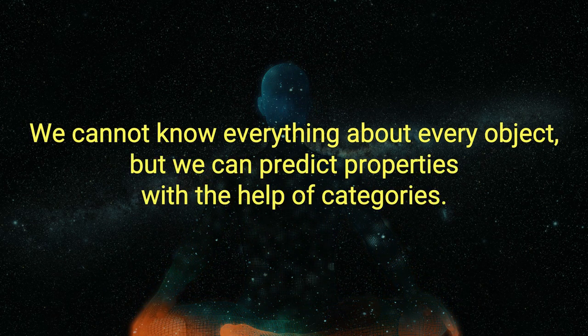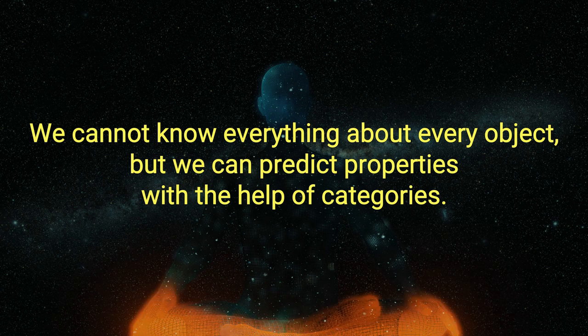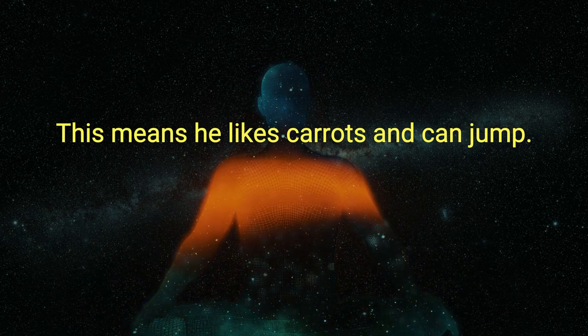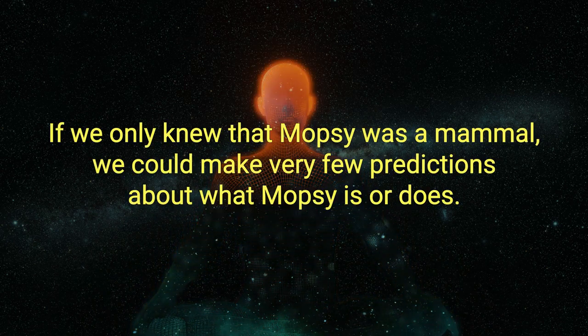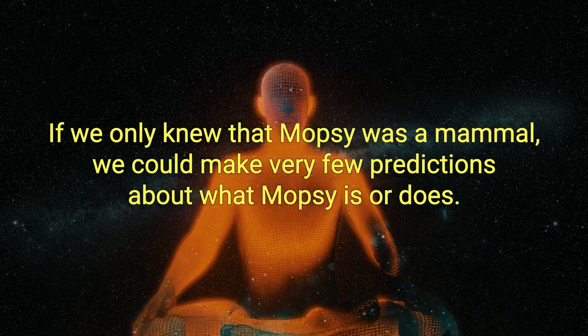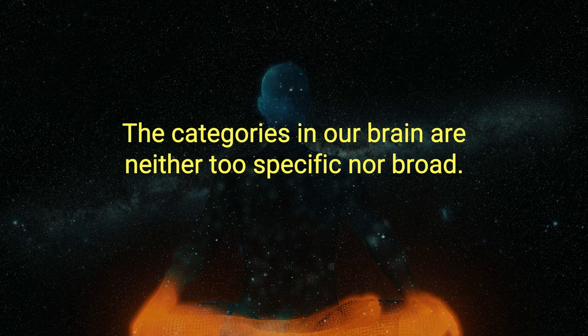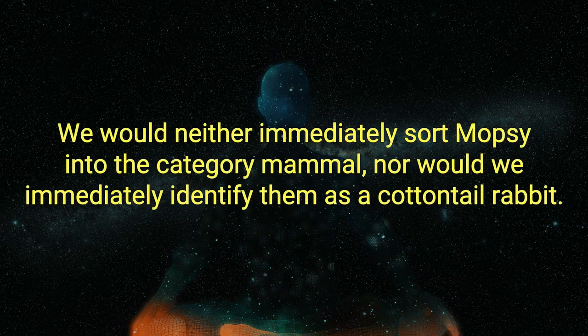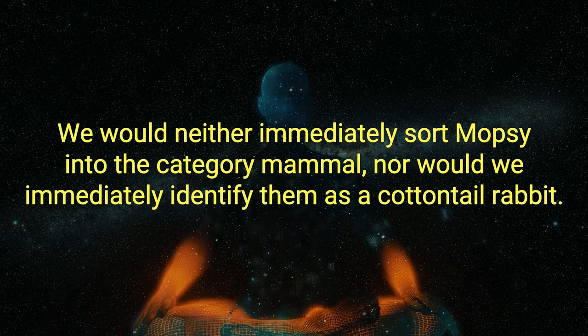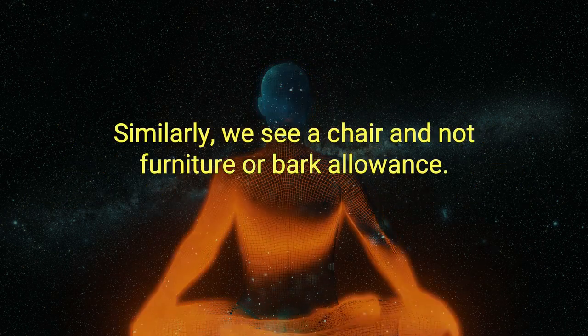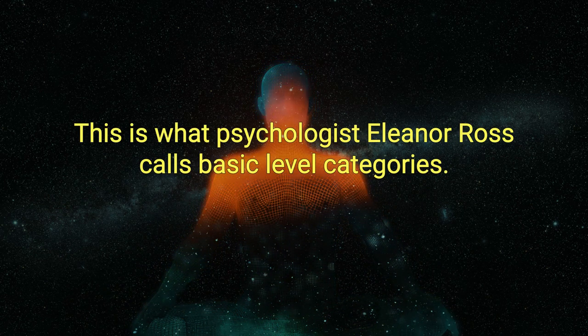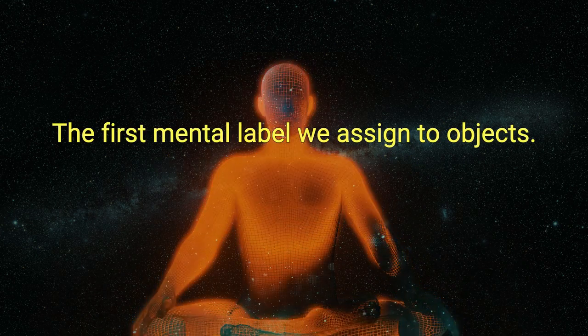We cannot know everything about every object, but we can predict properties with the help of categories. As an example, Mopsy has long ears, so he is a rabbit. This means he likes carrots and can jump. If we only knew that Mopsy was a mammal, we could make very few predictions about what Mopsy is or does. The categories in our brain are neither too specific, nor too broad. We would neither immediately sort Mopsy into the category mammal, nor would we immediately identify him as a cottontail rabbit. Similarly, we see a chair, and not furniture or barcalounger. This is what psychologist Eleanor Rosch calls basic level categories, the first mental label we assign to objects.